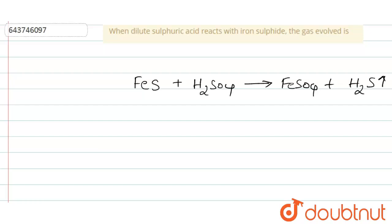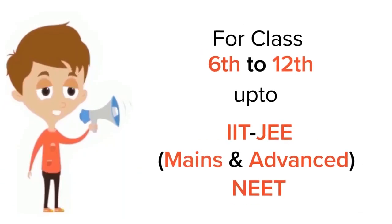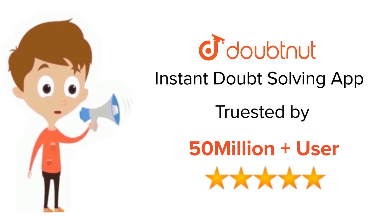If you see the names of the compounds: iron sulfide, iron sulfate, and hydrogen sulfide. So the answer — the gas evolved — is H₂S. Thank you. For class 6–12, IIT JEE, and NEET level, trusted by more than 5 crore students.